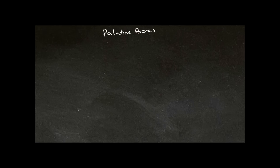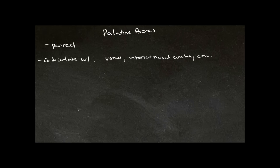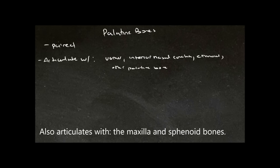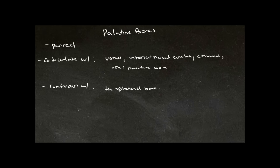Hi guys, welcome to Tutes Online. Today I'm going to take you through the palatine bone. This is a paired bone; it articulates with the vomer, the inferior nasal concha, the ethmoid bone, and the other palatine bone. It can be confused with the sphenoid bone and the maxilla.